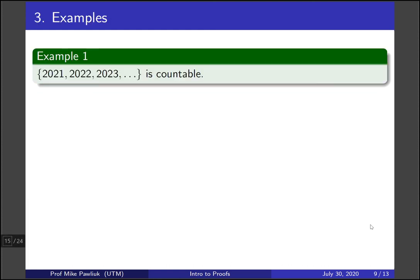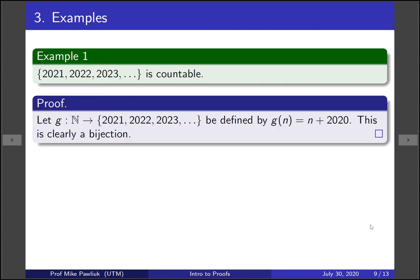So here's an example. Show that the set 2021, 2022, 2023, and all positive integers after that, is a countable set. As a hint, this was one of the Hilbert hotel problems. So let G be the function from the naturals to that set, defined by G of n is n plus 2020. This is pretty clearly a bijection.